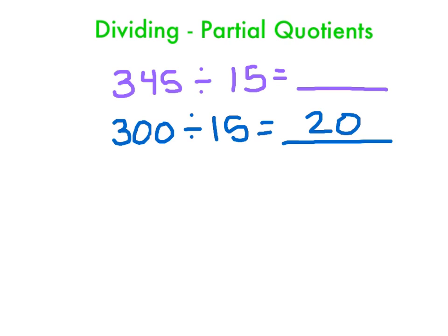So now I've done 300 of my 345. So that's part of it. I have 45 left over. So I'm going to go ahead and do 45 divided by 15. And we get lucky here. There's not going to be a remainder. 15 does go into 45 three times with nothing left over.